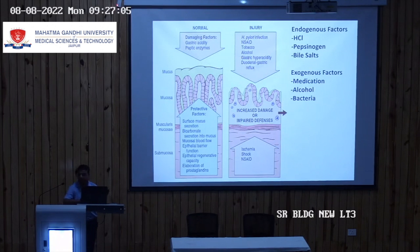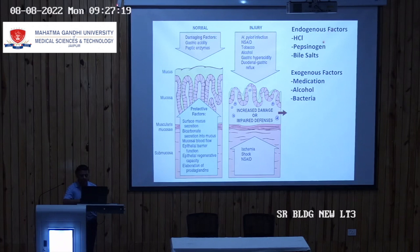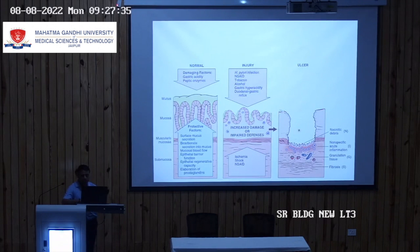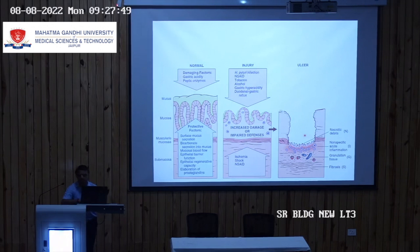The injury causes can be divided into endogenous factors — HCl, pepsinogen, and bile salts — and exogenous factors — medications, alcohol, and bacteria. The result of these factors is ulcer formation. The ulcer base contains: necrotic debris, non-specific acute inflammation, granulation tissue, and fibrosis.